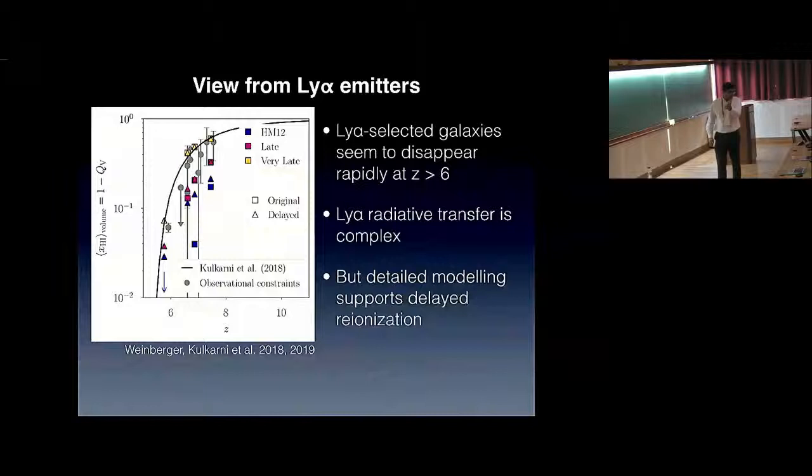In the interest of time, I'll just conclude. All I want you to take away is that we are now very confident about having understood the second half of reionization. We think that reionization is late—it ends at 5.2-5.3, the midpoint is at 7.5—it is consistent with being caused by galaxies, and consistent with many other constraints we have on reionization. I'll stop there. Thanks.